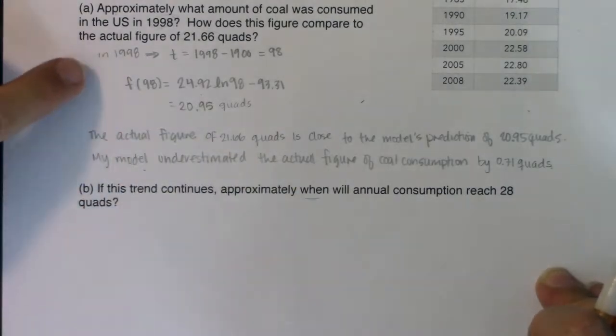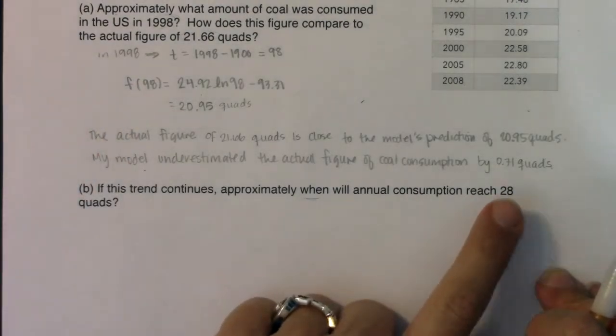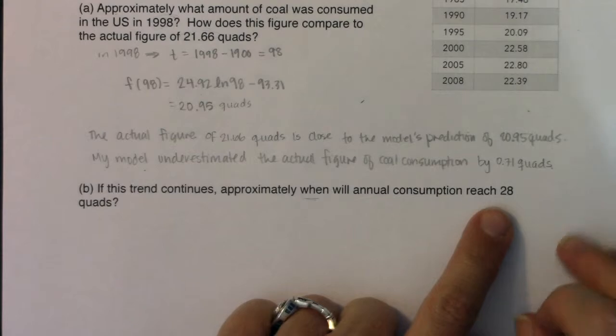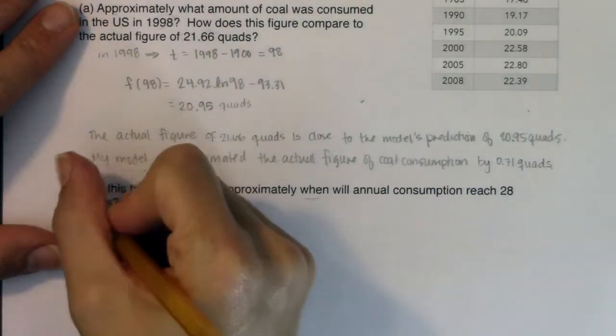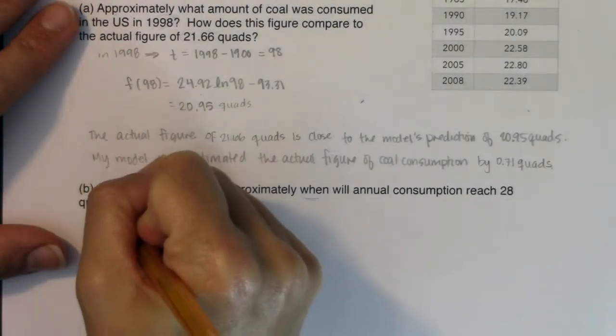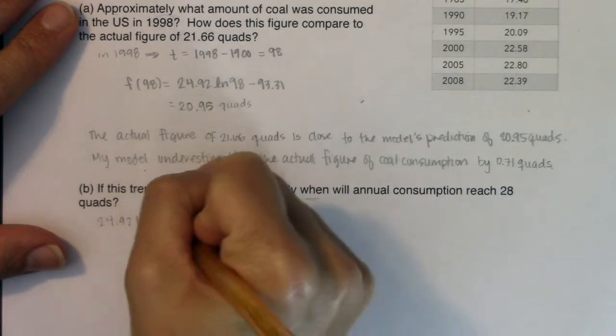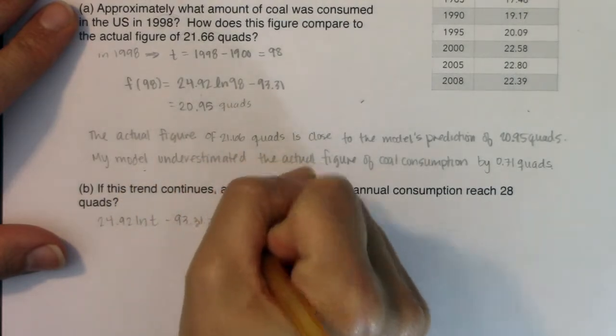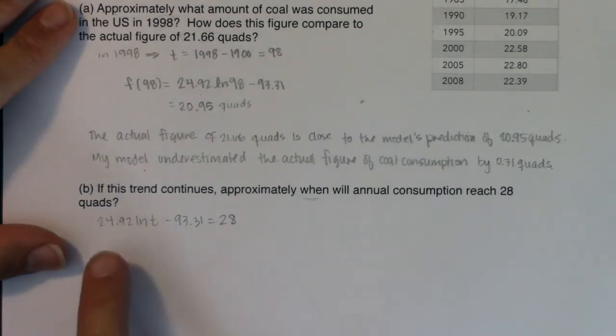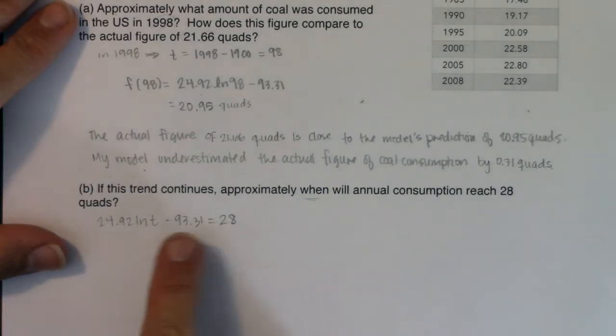Now I have my logarithmic model. We know it's 24.92 ln(t) minus 93.31, and I want to see when is that equal to 28 quads? Because this 28 quads is a y value, or it is a function value. So I want to set my equation, I want to set 24.92 ln(t) minus 93.31, when is that equal to 28? That's what I'm trying to solve here. When is fuel consumption equal to 28? What time? So I want to solve for t.